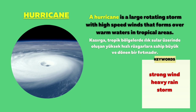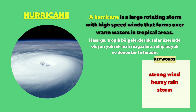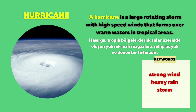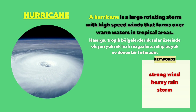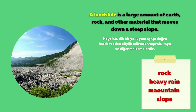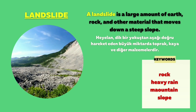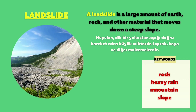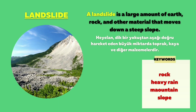Hurricane: A hurricane is a large rotating storm with high-speed winds that forms over warm waters in tropical areas. Landslide: A landslide is a large amount of earth, rock, and other material that moves down a steep slope.